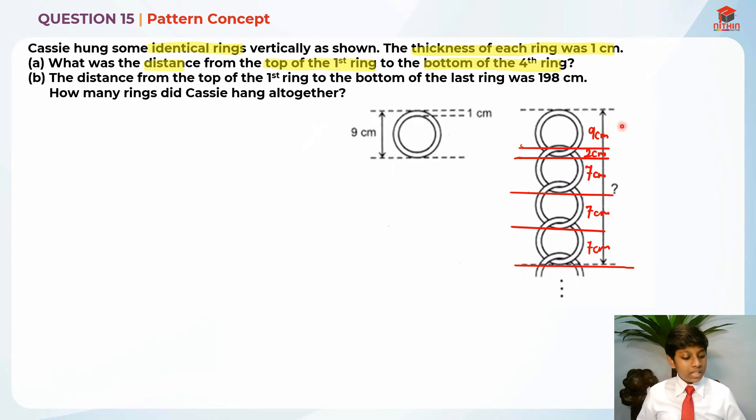In order to find the distance, we basically take 9 cm plus 7 cm plus 7 cm plus 7 cm. Which will give us 9 cm plus 21 cm, which will give us 30 cm as the answer. So this is the answer for part A.